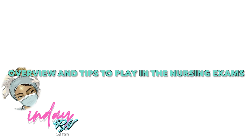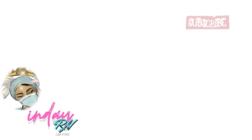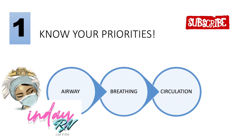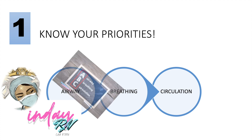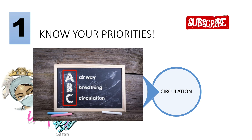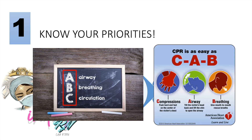Number one on the list: you should know your priorities — knowing your ABCs: Airway, Breathing, and Circulation. When figuring out how to prioritize your answer choices, always remember the ABC. Airway is always the priority, unless you are doing CPR, wherein we reverse it to CAB: Compressions, Airway, and Breathing.